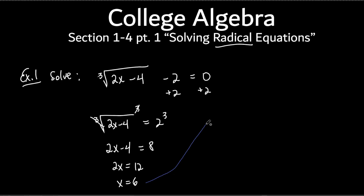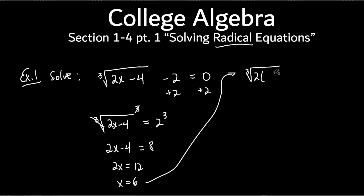We're going to plug x equals 6 back into the original problem. I'm going to rewrite the original problem, but instead of x I'll put what we got. So instead of 2x, I put 2 times 6. Remember, the minus 2 is not under the cube root, so make sure you put it outside. Let's see if this all equals 0.